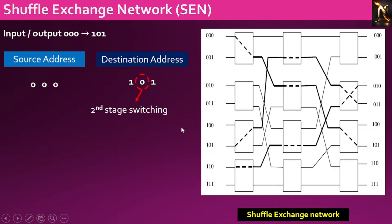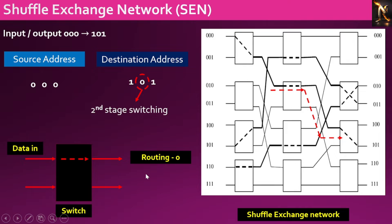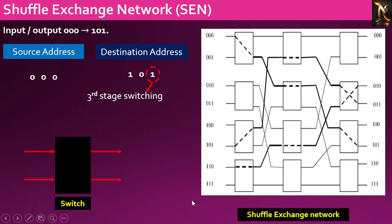Focusing on the middle bit, which is 0, indicates that the data present at the input of the switch in the second stage should be directed to the upper output port. In conclusion, the last bit, LSB, of the destination address being 1 signifies that the data at the input port of the third stage switch will be routed to the lower output port, corresponding to the destination port 101.